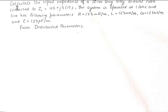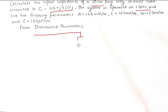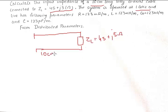The question looks something like this. It asks for the input impedance of a 10 centimeter line. The length and the load impedance are given. The system is operated at 1 gigahertz and has the following parameters. The load impedance is given as ZL = 45 + j5 ohms. We need to find Z_in at a distance of 10 centimeters from the load. However, the characteristic impedance of the transmission line is not given, so the first part will be to calculate that.